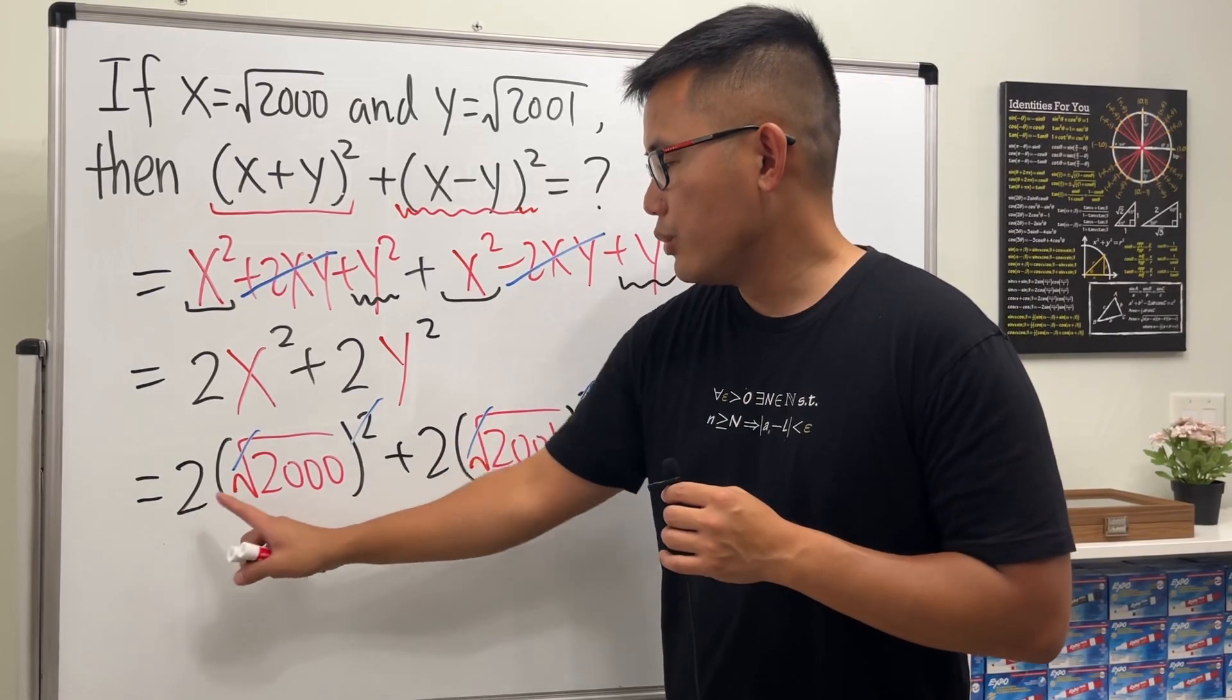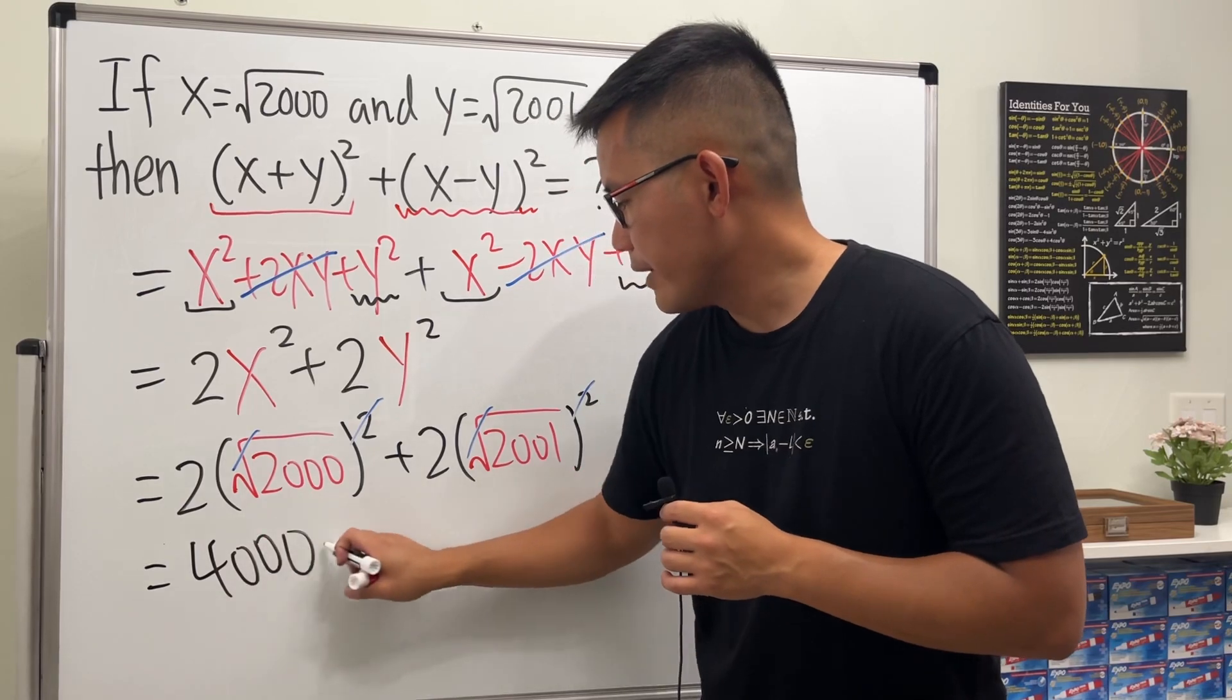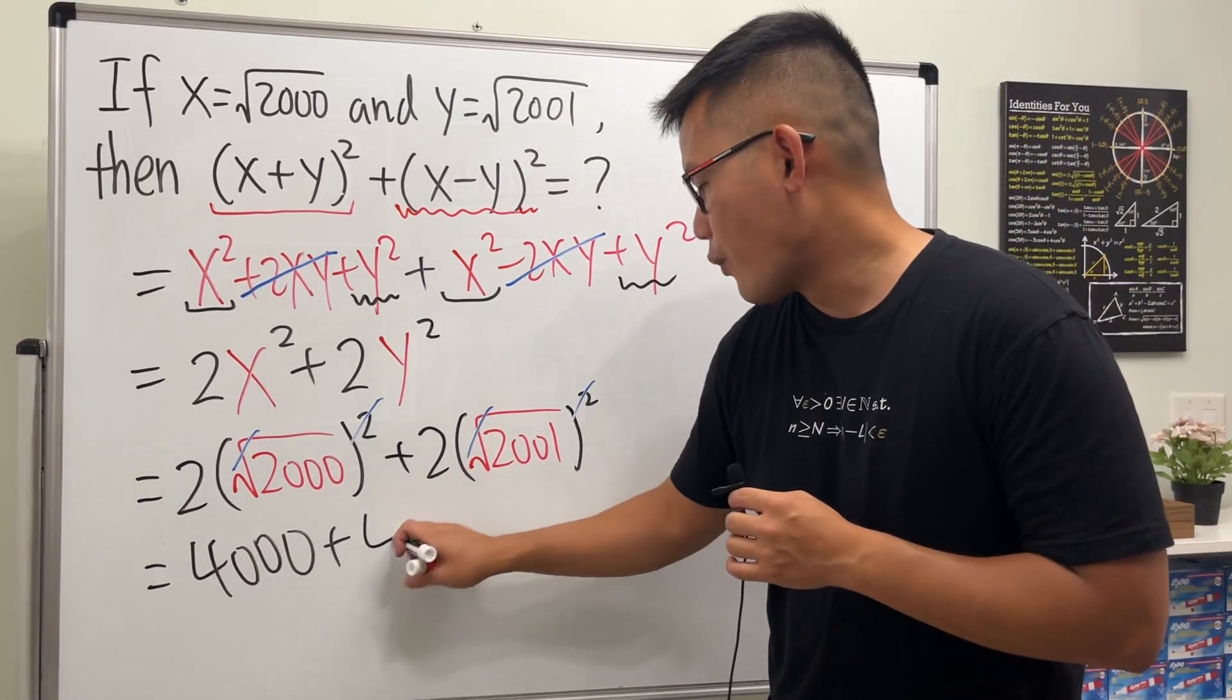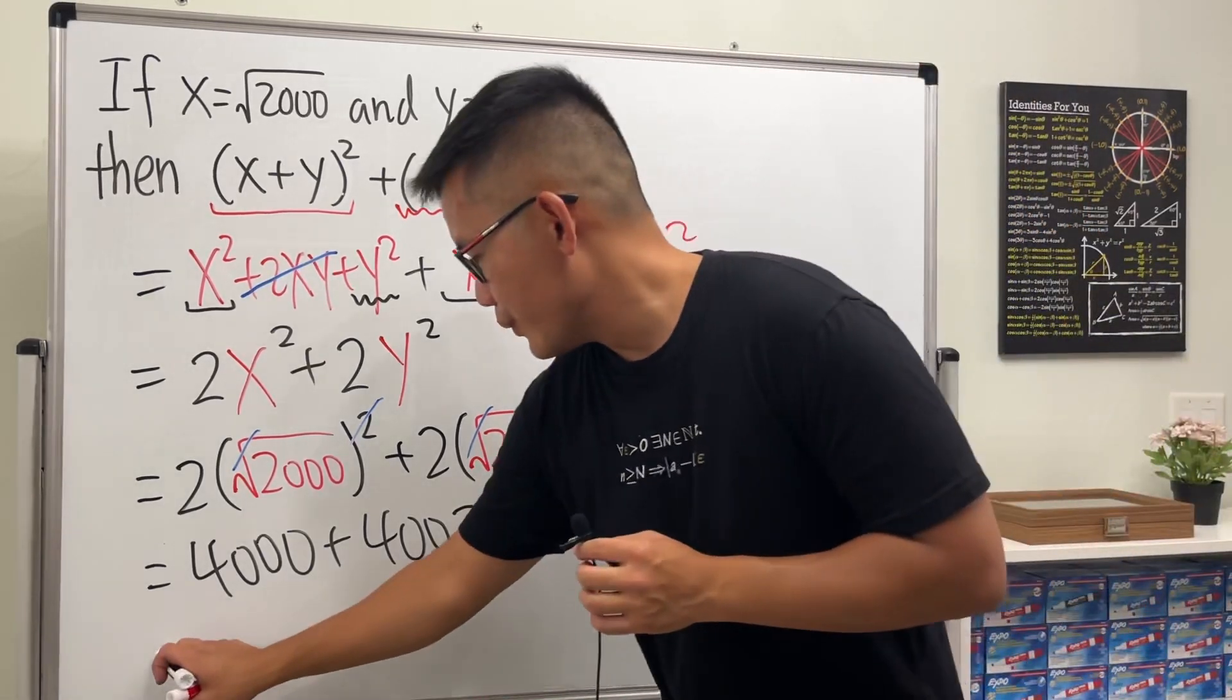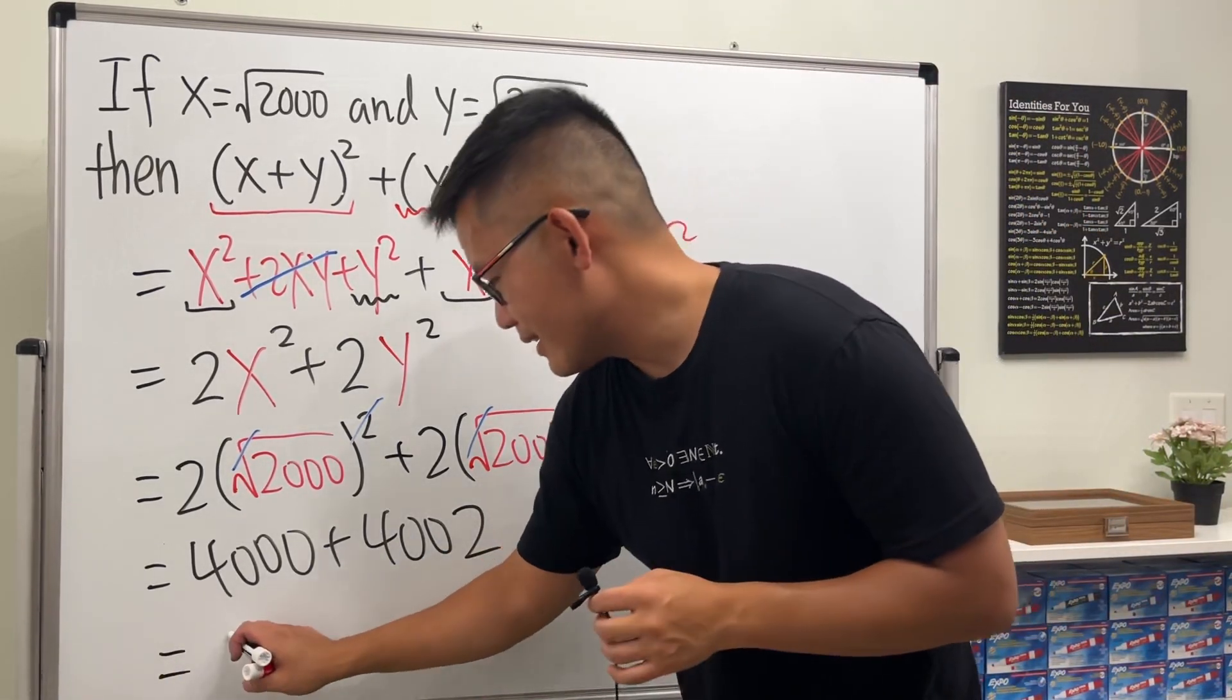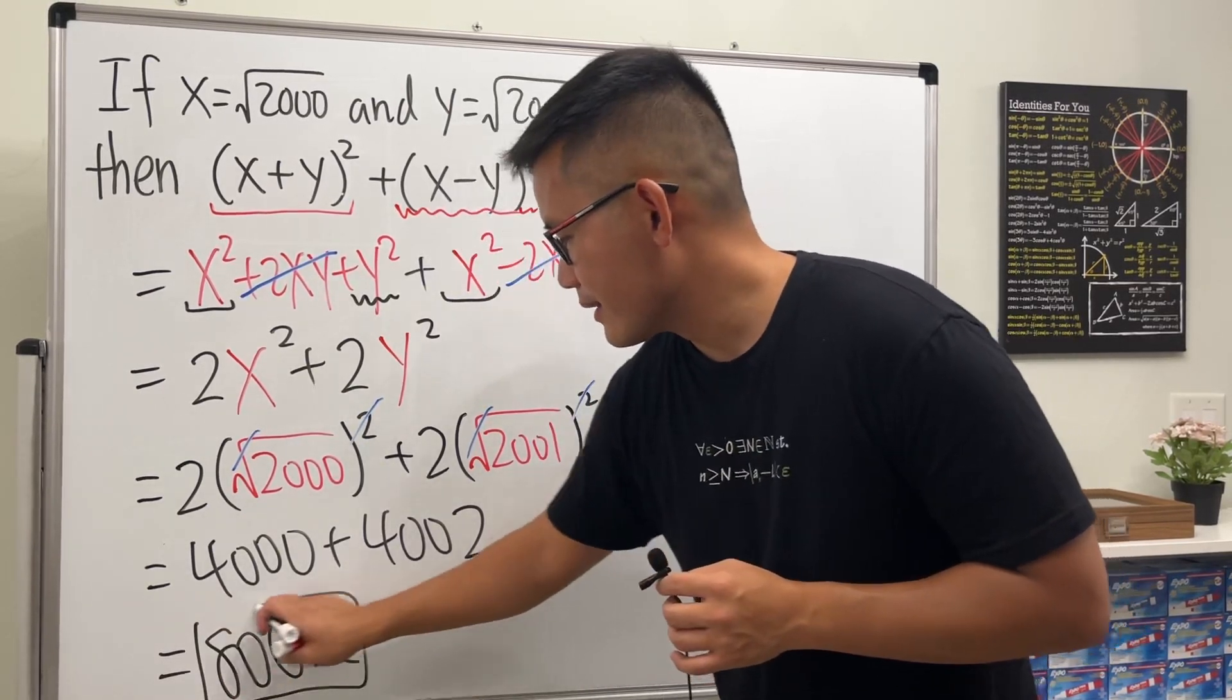And then right here, just go ahead and multiply 2 times 2000, so we have 4000. And then we add 2 times 2001, and that's 4002. Finally, combine them - we get 8002. Done.